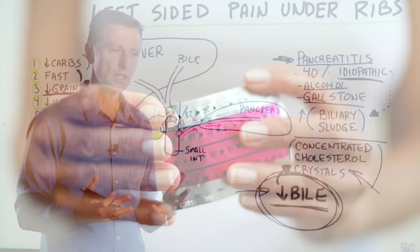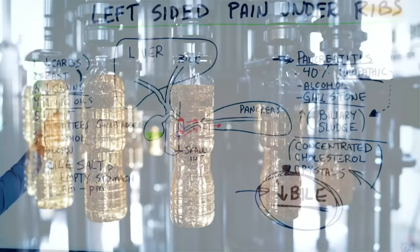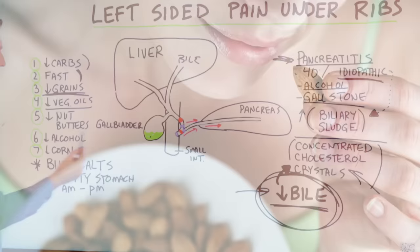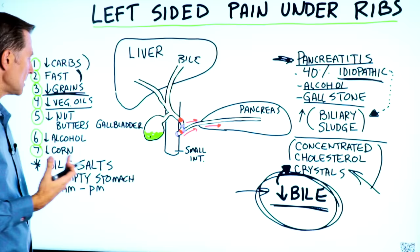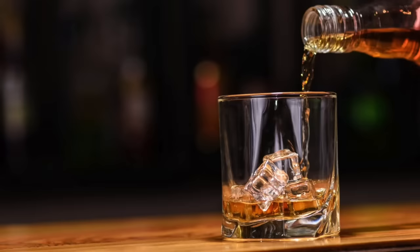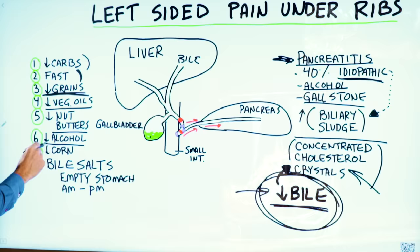The same thing applies to women taking estrogen replacement therapy. Vegetable oils are omega-6 and highly inflammatory — this can also increase insulin and create insulin resistance, which then creates a problem. Having too many nuts or nut butters can give you too many omega-6 fatty acids and irritate this area right here. Of course, we talked about alcohol — you're going to have to cut down your alcohol.